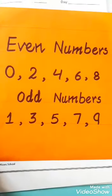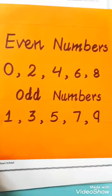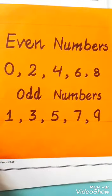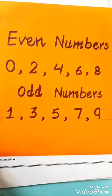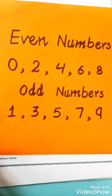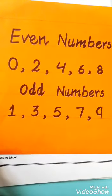In previous lecture I told you about the even and odd numbers. Even numbers are 0, 2, 4, 6, 8 and odd numbers are 1, 3, 5, 7, 9.